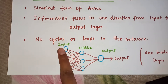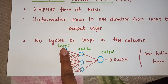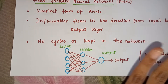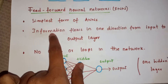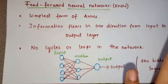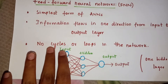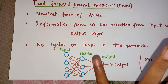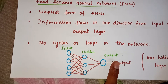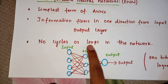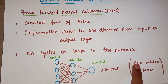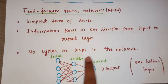Information flows directly from the input layer to the output layer. Next, there are no cycles or loops in the network — only direct information passing with no cycles or loops. There is only one hidden layer in a feed forward neural network.